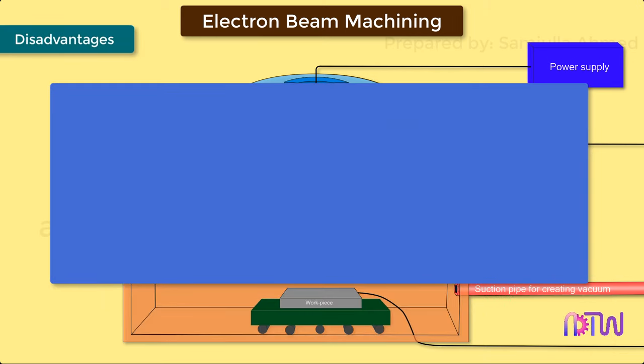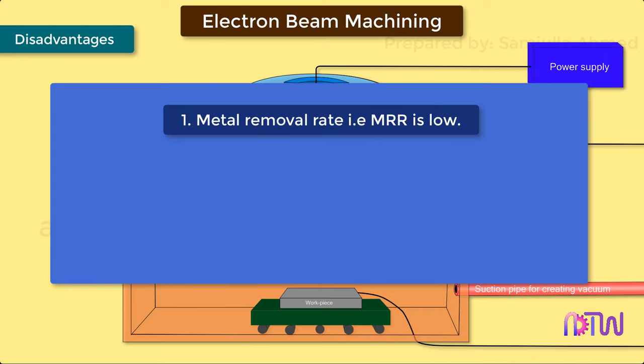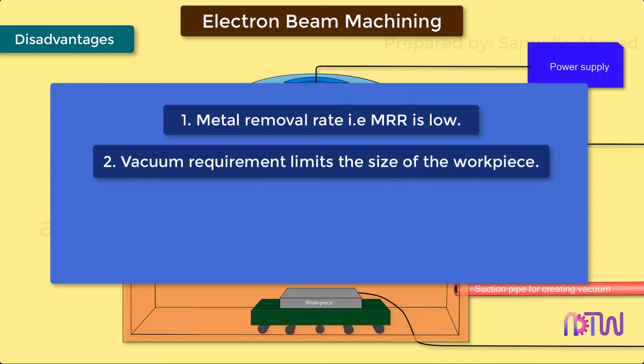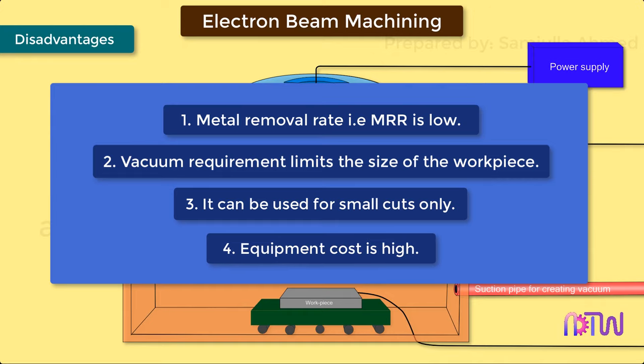Disadvantages of EBM: 1. Metal removal rate, that is, MRR is low. 2. Vacuum requirement limits the size of the workpiece. 3. It can be used for small cuts only. 4. Equipment cost is high.